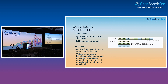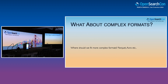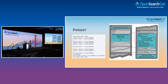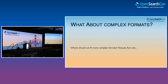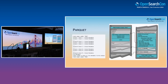Now we kind of know what the building blocks of a field are, what describes how they're implemented and encoded. What does this mean for us? We mentioned we want Parquet, we want Avro, we want the formats that the data warehouse and data science community is using. Avro is fairly straightforward — we'd likely use stored fields since it's a row format. Parquet is something a little more complex. Parquet is also stored in a columnar fashion, very similar to doc values.